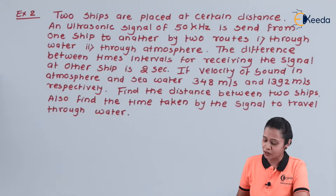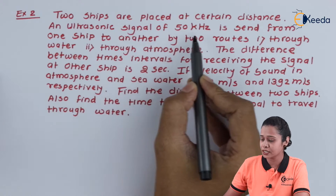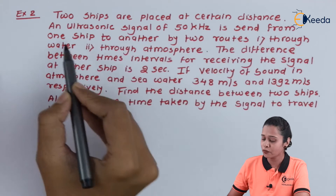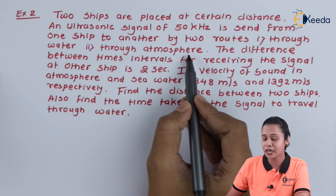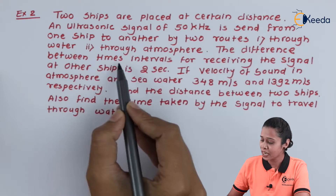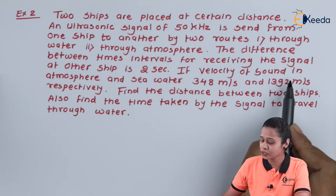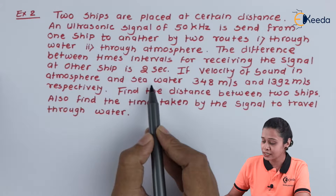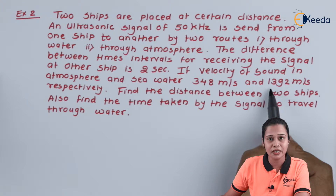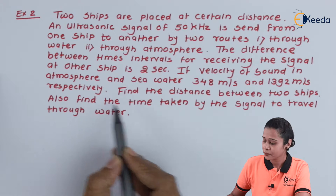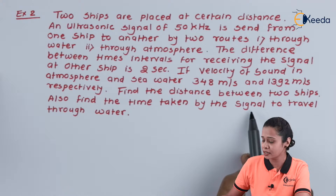In numerical number 2, we have two ships placed at a certain distance. An ultrasonic signal of frequency 50 kHz is sent from one ship to another by two routes: first through the water, and second through the atmosphere. The difference between the time intervals for receiving the signal at the other ship is 2 seconds. The velocity of sound in the atmosphere is 348 m/s and in seawater is 1392 m/s. Find the distance between the two ships and the time taken by the signal to travel through the water.